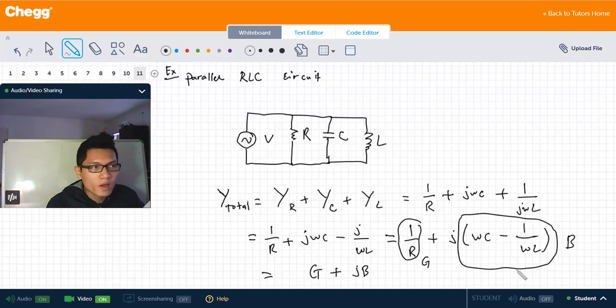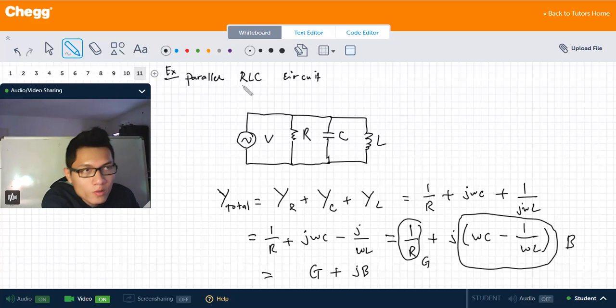This one is actually the G and this expression here is called the B. G is the conductance and B is the susceptance. If you have any real value for ω, R, C, or L, we can just plug in the formula and find the conductance and susceptance of the circuit from the admittance formula of the parallel RLC circuit.